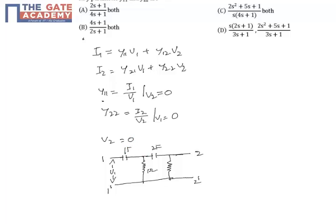This is the 1-farad capacitor. Before that, this is the 1-ohm resistor. Now, there is a short-circuit here.